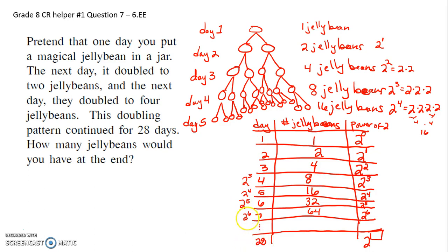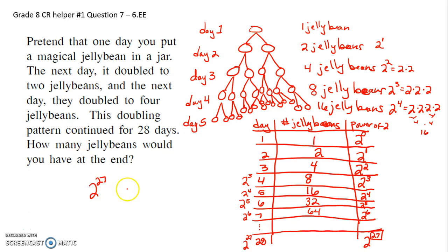So if you're way up at day twenty-eight, how do we figure out the power? Six is one less than seven, five is one less than six, four is one less than five — so on day twenty-eight, it better be two to the twenty-seventh power. Two to the twenty-seventh power on day twenty-eight.